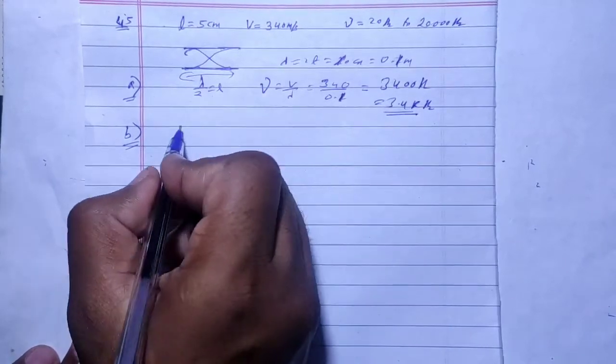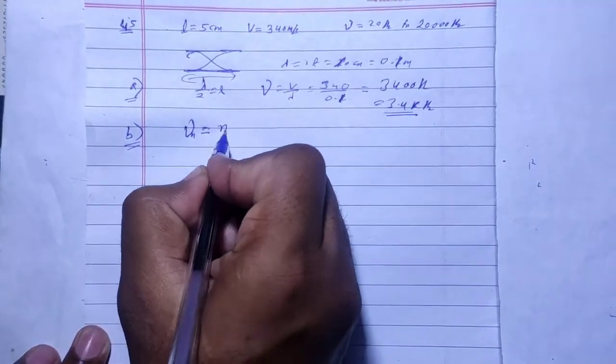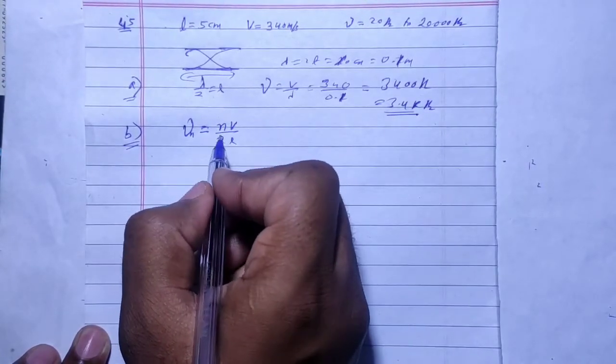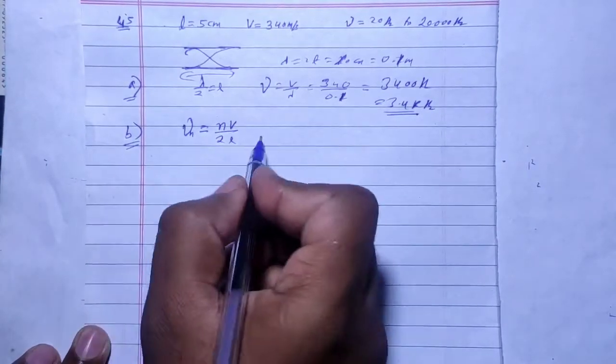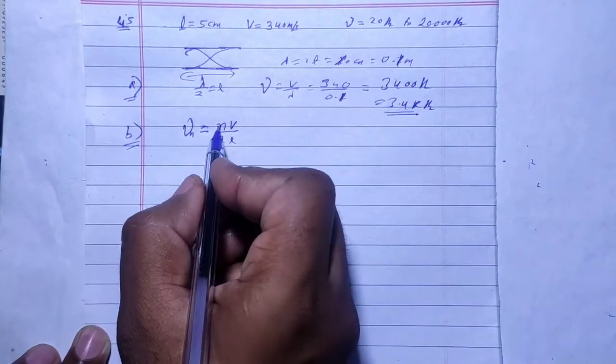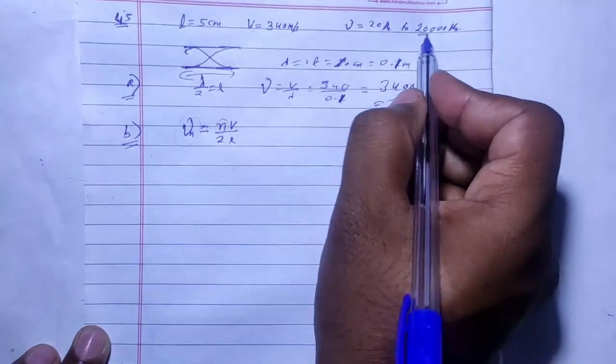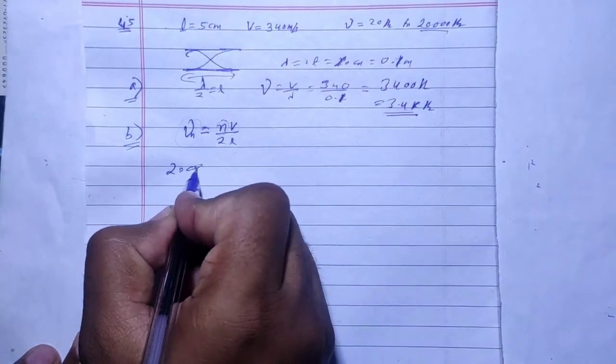The frequency for the nth mode of vibration is n times v by 2L. For the highest harmonic, we set the frequency equal to the upper limit of the audible range, which is 20,000 Hz or 20 kHz.